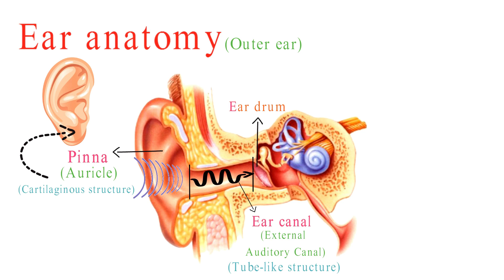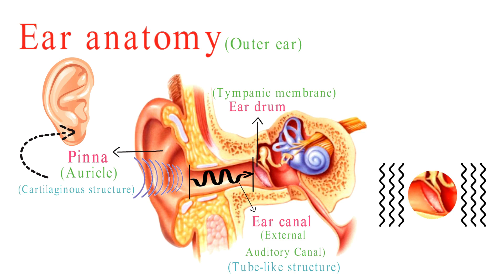The last part of the outer ear is the eardrum — a thin membrane-like structure also known as the tympanic membrane — which separates the outer ear from the middle ear. When sound waves strike it, it starts vibrating and converts sound waves into vibrations. These vibrations are then passed on to the middle ear.